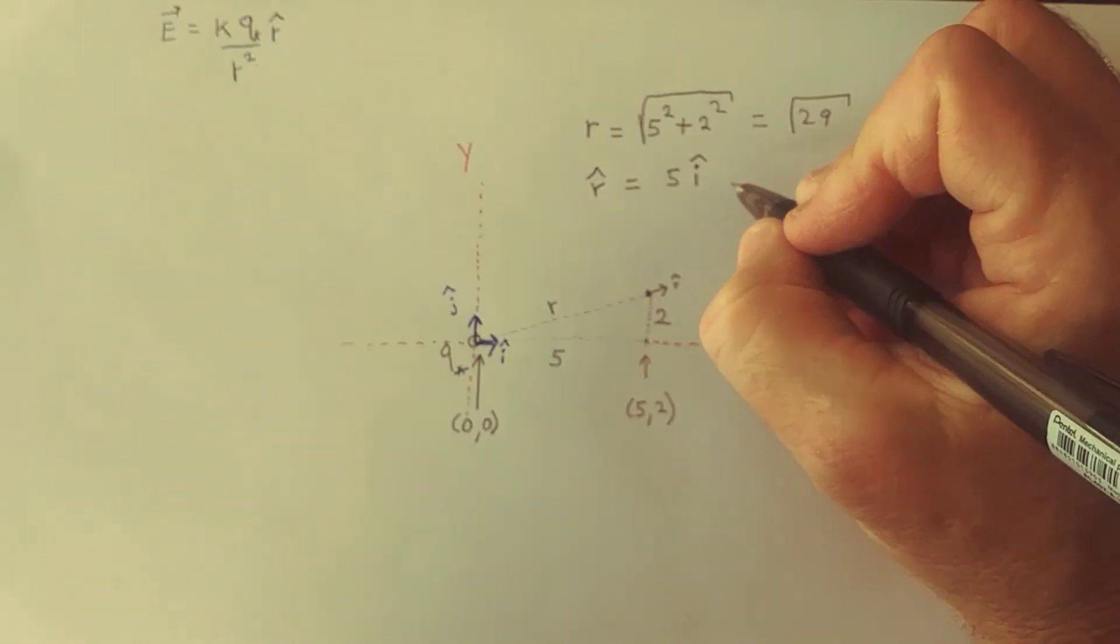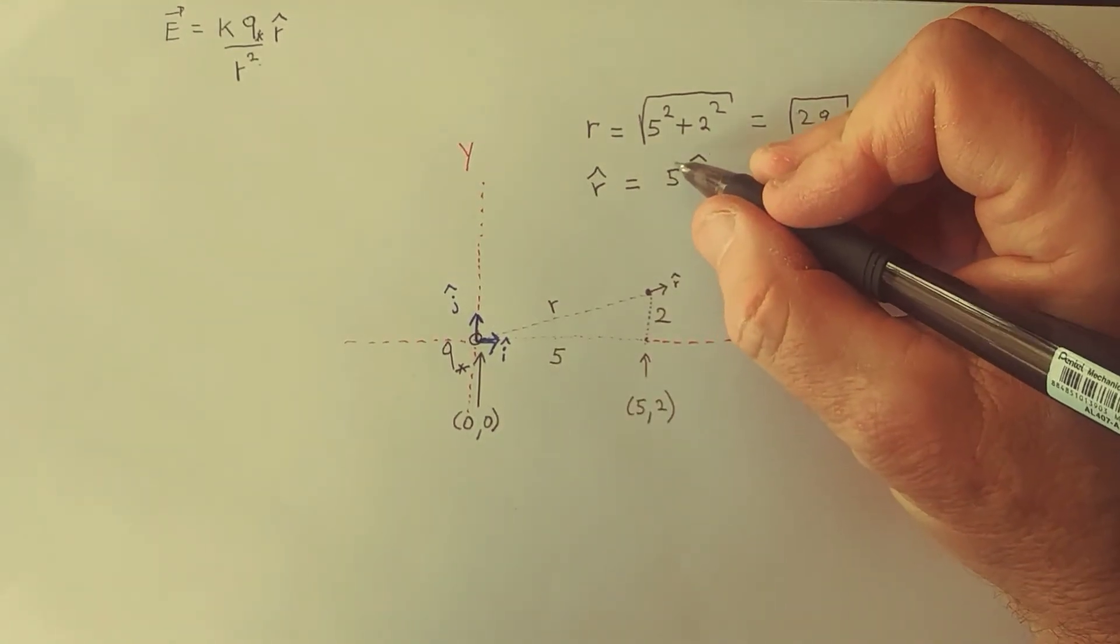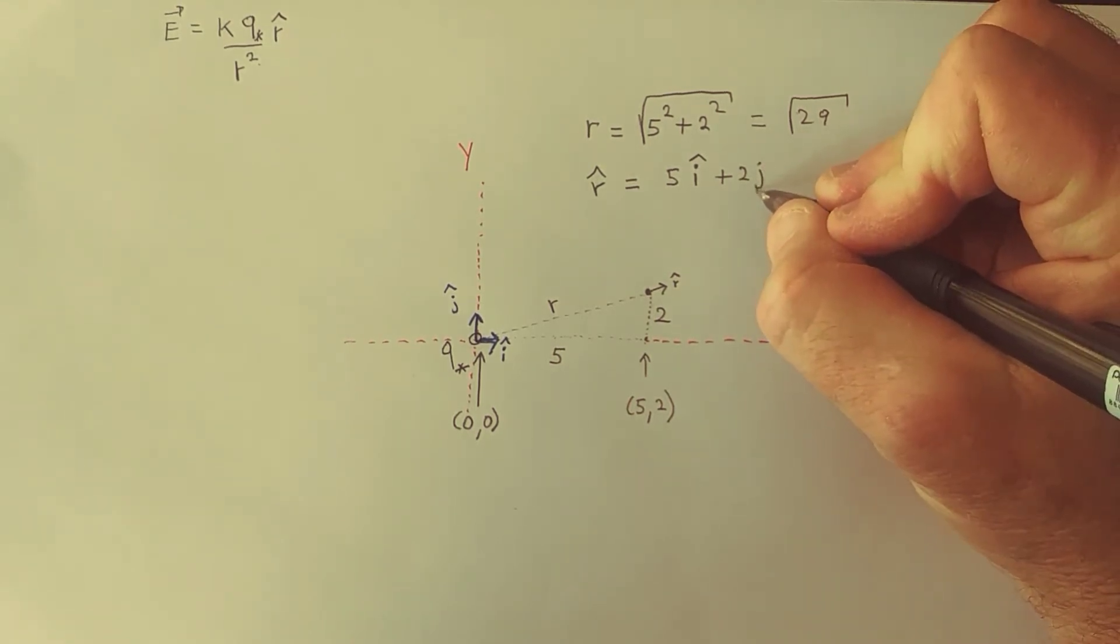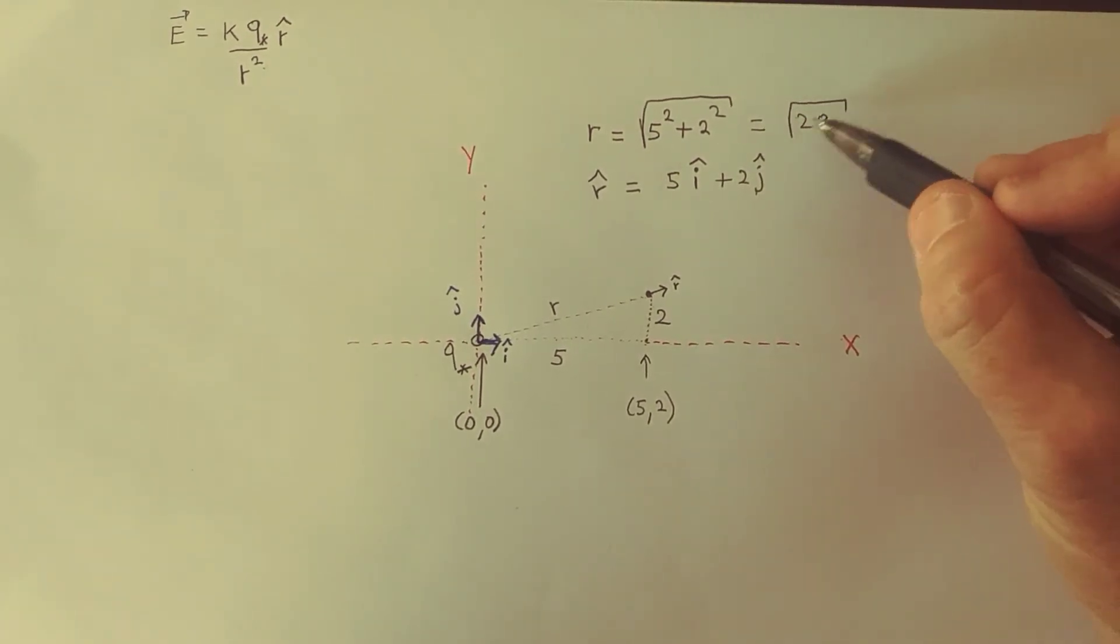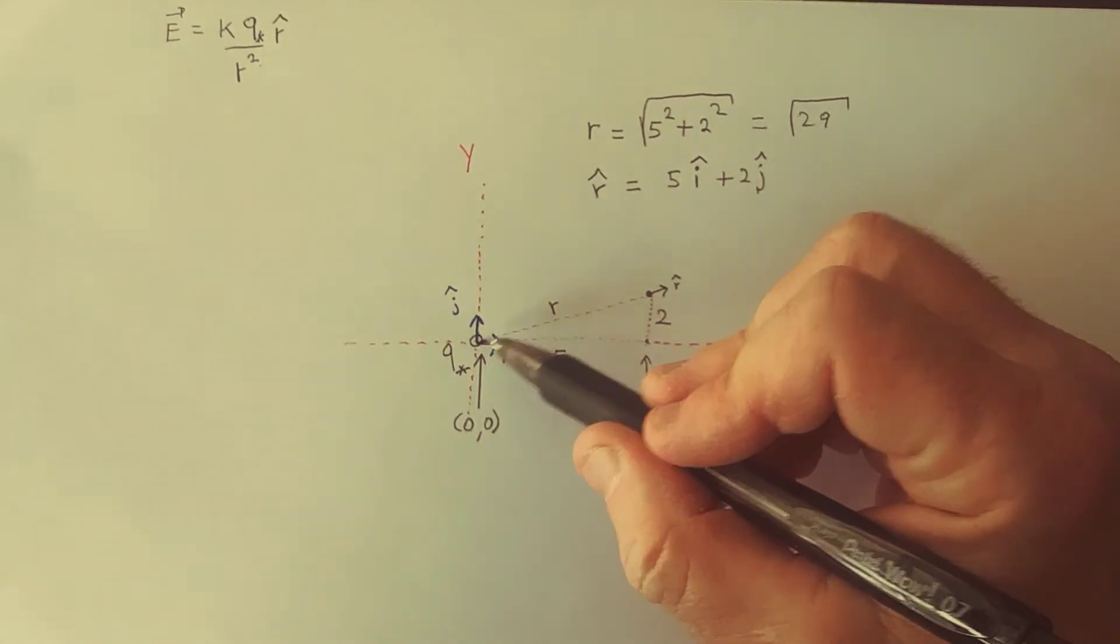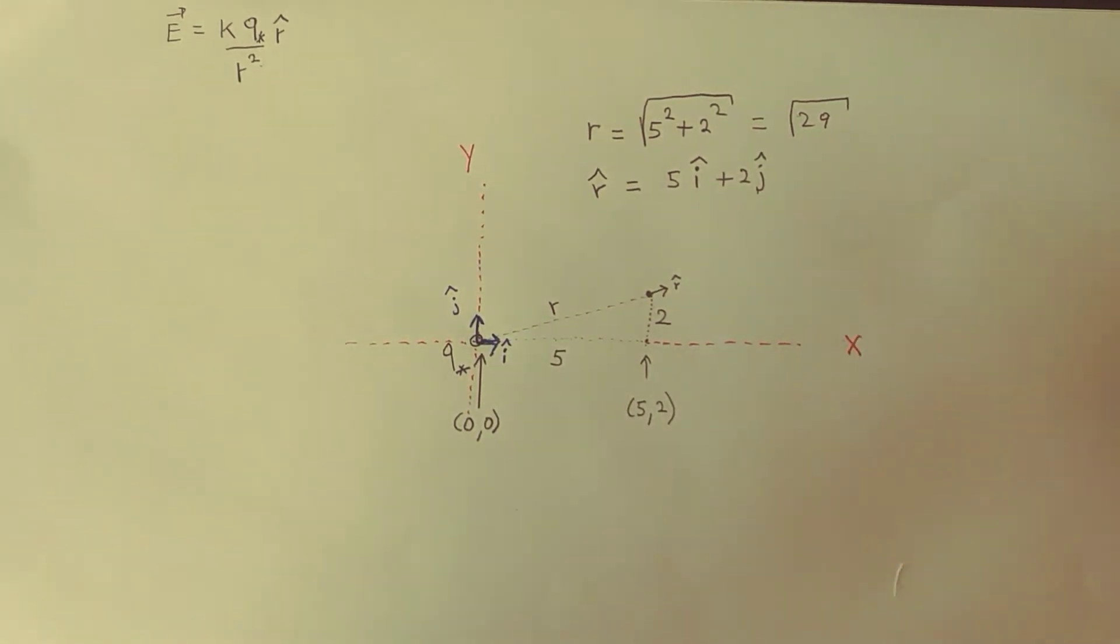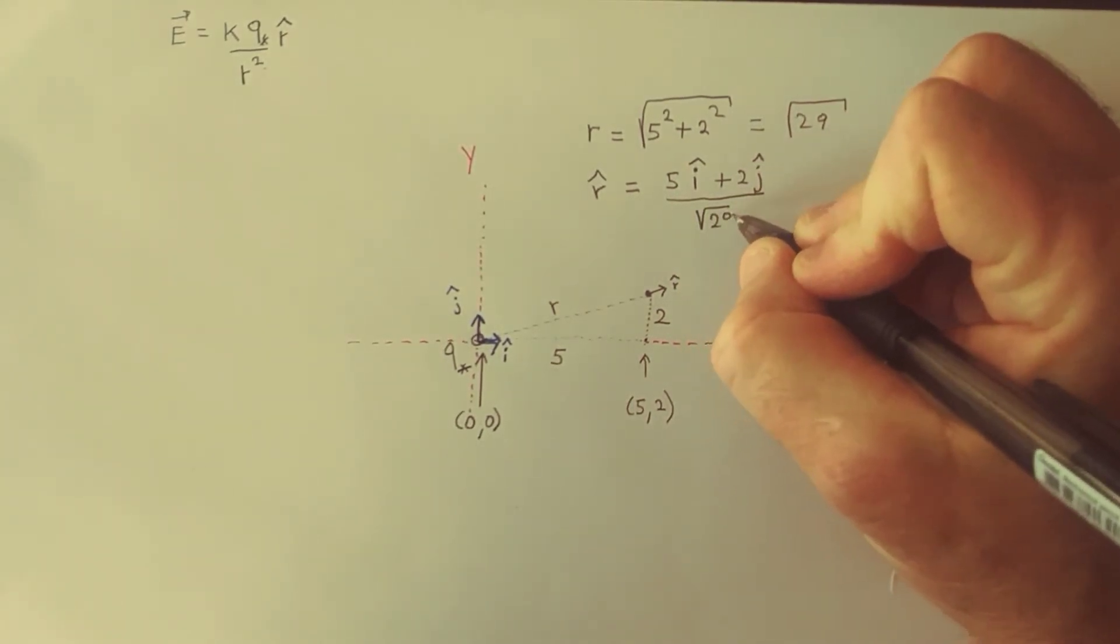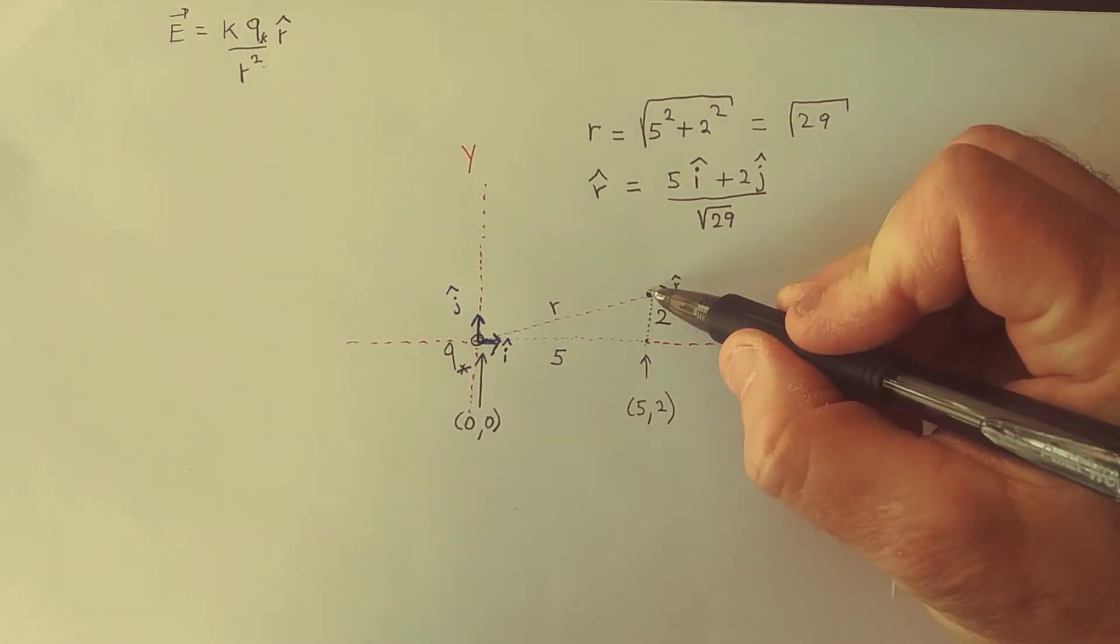And so the vector that's pointing that way has components 5 and 2. But we know that that's not a unit vector because its magnitude is the square root of 29. It's the length of that vector. So we simply divide that by the square root of 29. So we found a unit vector that captures the direction of the electric field at this location.